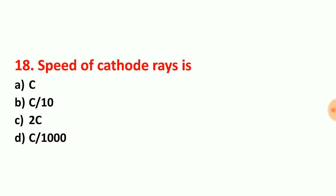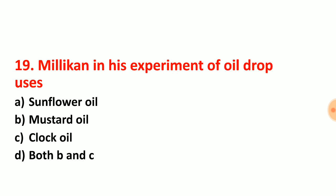Question number 18: speed of cathode rays is one-tenth of the velocity of light. That is the speed of cathode rays.